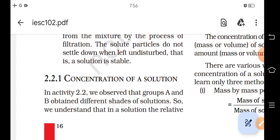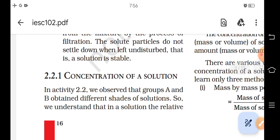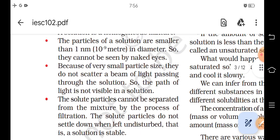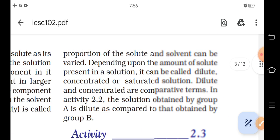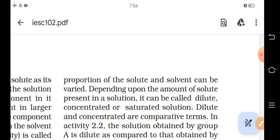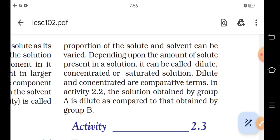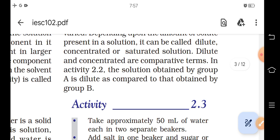Concentration of a solution: In activity 2.2, we observed that groups A and B obtained different sets of solutions. So we understand that in a solution, the relative proportion of the solute and solvent can be varied. Depending upon the amount of solute present in a solution, it can be called dilute, concentrated or saturated solution. Dilute and concentrated are comparative terms. In activity 2.2, the solution obtained by group A is dilute as compared to that obtained by group B.